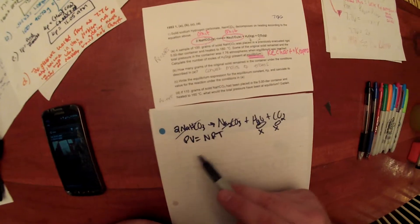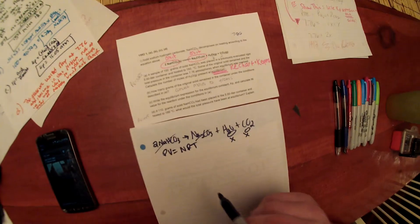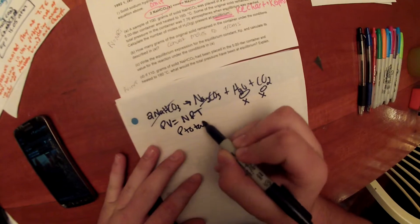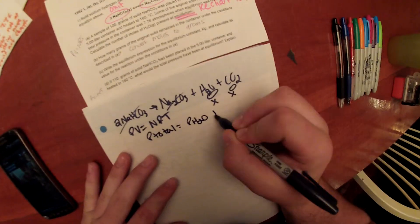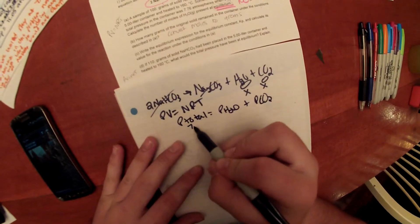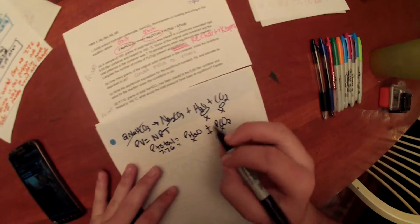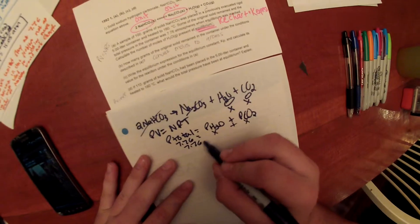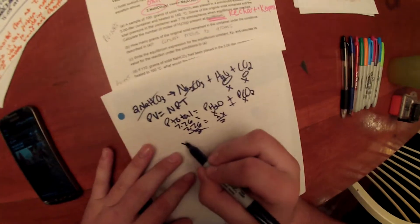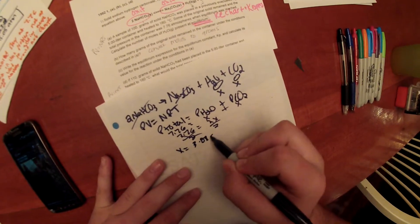We have all these variables except for pressure. We are given total pressure, but we need partial pressure of H2O and CO2, which is solved as P total equals P H2O plus P CO2. We are given the P total as 7.76, and we will use X as variables for H2O and CO2. So we get 7.76 equals 2X, and then we divide by 2, and we get X equals 3.88 ATMs.